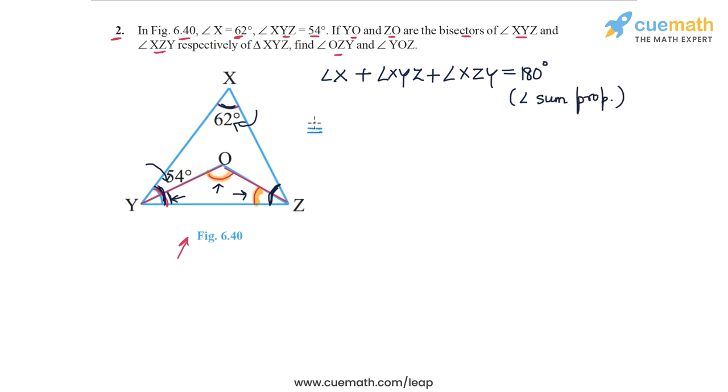So let's plug in the values. So angle X is 62 degrees, angle XYZ is 54 degrees, and angle XZY is 180 degrees. Angle XZY and this sum is equal to 180 degrees. So 62 plus 54 is 116. So 116 degrees plus angle XZY is equal to 180. And from here, we get the measure of angle XZY is 180 minus 116. That's equal to 64 degrees.